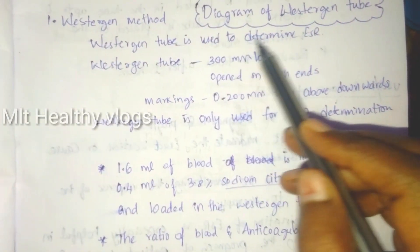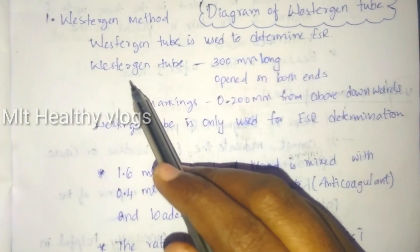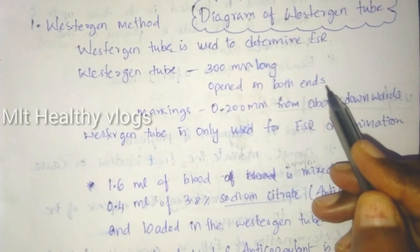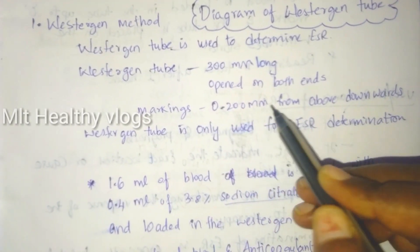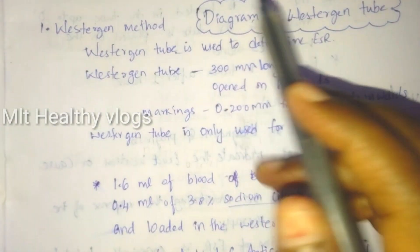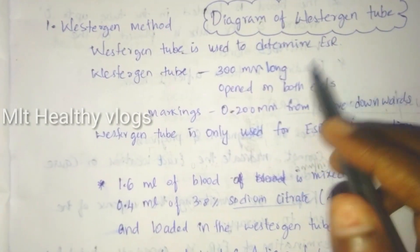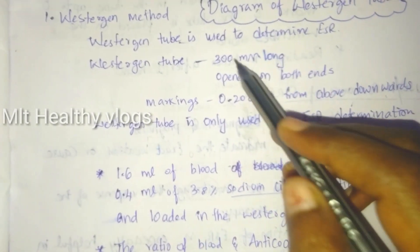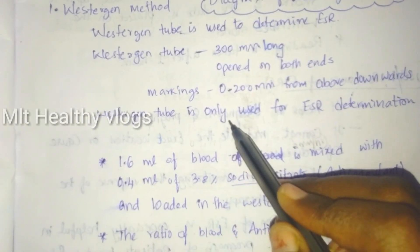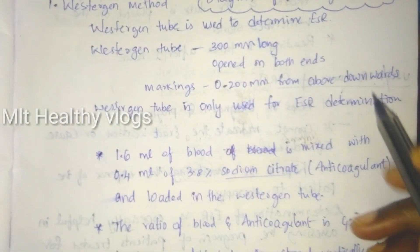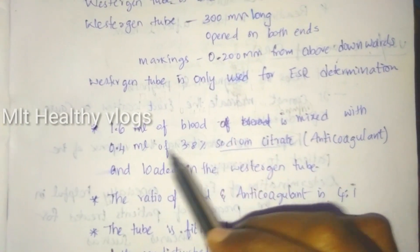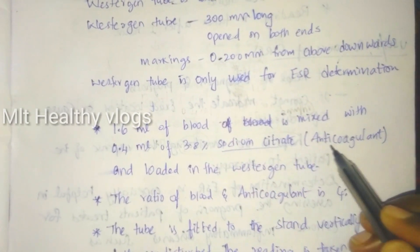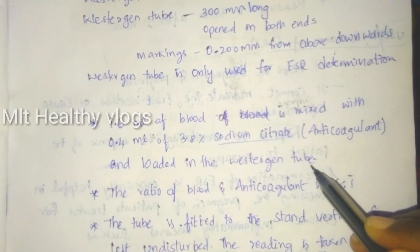The Westergren tube is used to determine ESR. It is 300 mm long, opened on both ends, with markings from 0 to 200 mm from above downwards. The main importance of the Westergren tube is that it is only used for ESR determination. 1.6 ml of blood is mixed with 0.4 ml of 3.8% sodium citrate, which is the anticoagulant, and loaded into the Westergren tube.